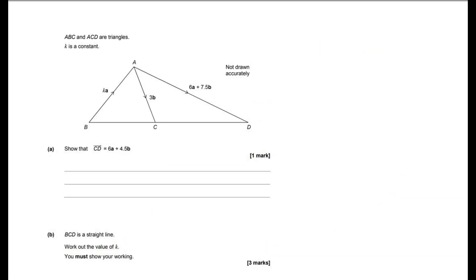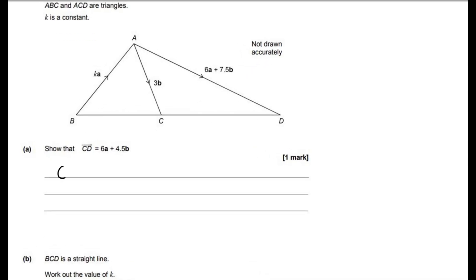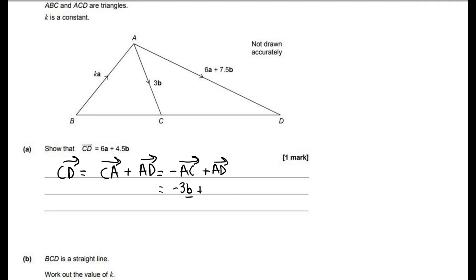For our third question, ABC and ACD are triangles and K is a constant. Show that the vector CD is equal to 6A plus 4.5B. CD can be written as vector CA plus vector AD, or minus AC plus AD. We know that AC is 3B, so that's minus 3B plus 6A plus 7.5B, which is just 6A plus 4.5B.